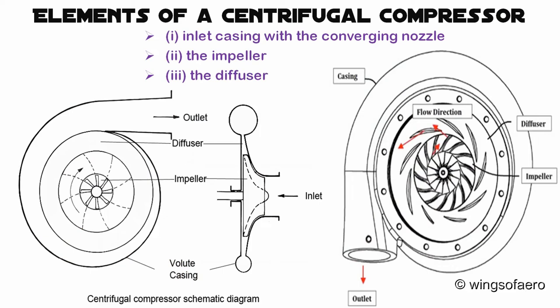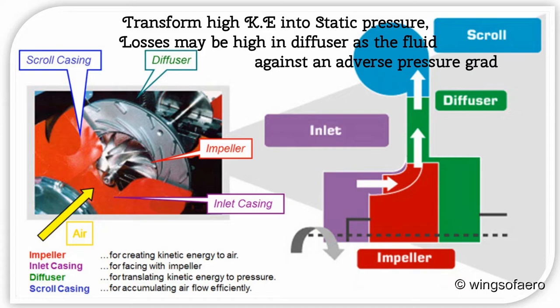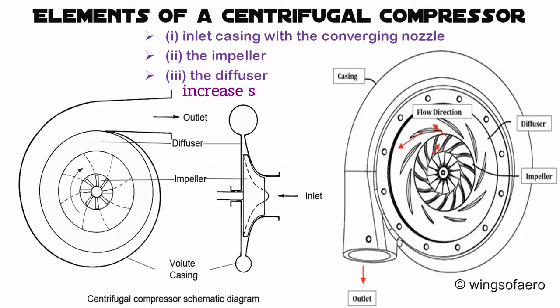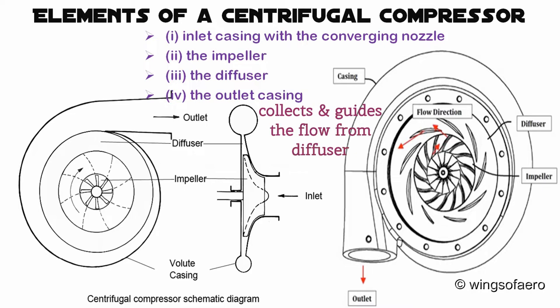The diffuser's function is to transform the high kinetic energy of the fluid at the impeller outlet into static pressure. The main aim of providing diffusers is to increase static pressure by reducing kinetic energy. The outlet casing comprises a fluid collector, also known as the volute.